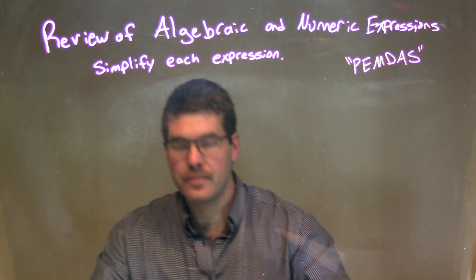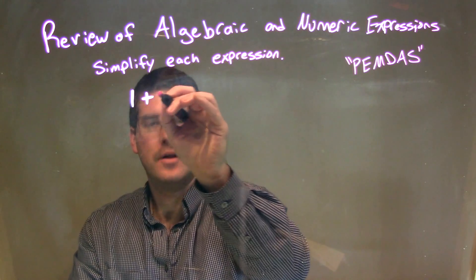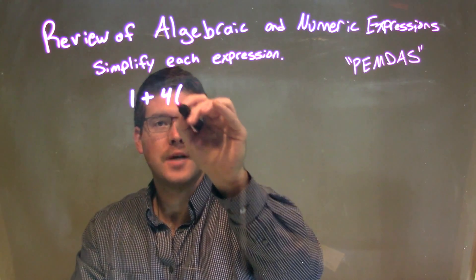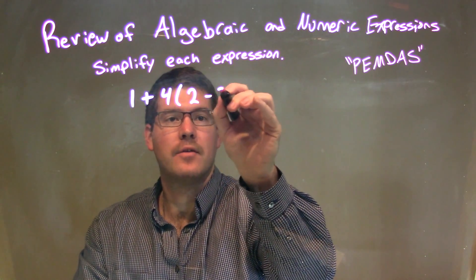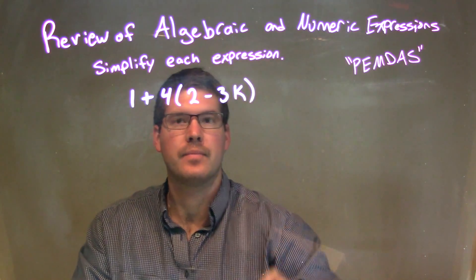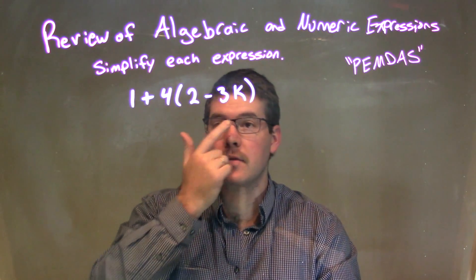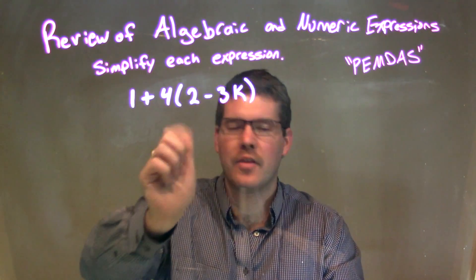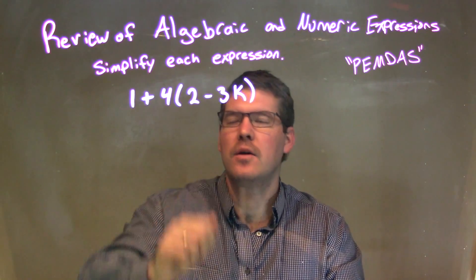So if I was given this expression, 1 plus 4 times 2 minus 3k. Well, when I'm simplifying this, I look at my parentheses. Nothing I can simplify within the parentheses. No like terms there.